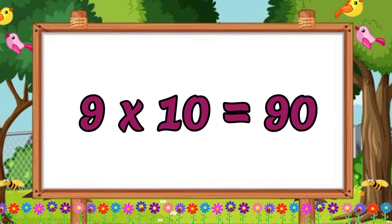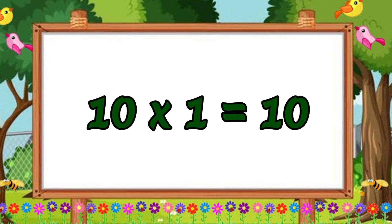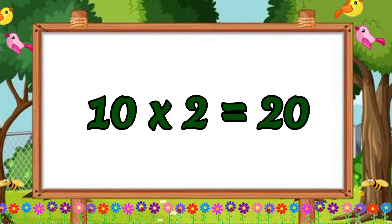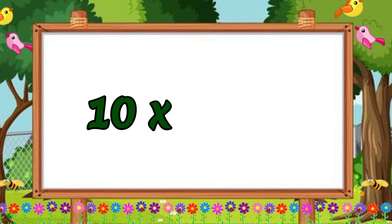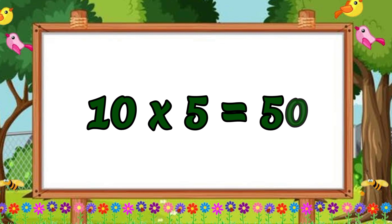Table of ten. Ten ones are ten. Ten ones are ten. Ten twos are twenty. Ten twos are twenty. Ten threes are thirty. Ten threes are thirty. Ten fours are forty. Ten fours are forty. Ten fives are fifty. Ten fives are fifty.